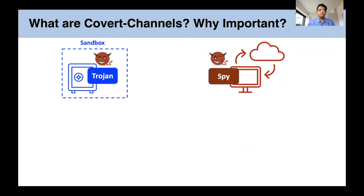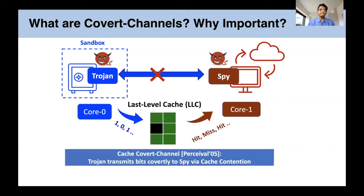Covert channels are channels of communication used by malicious programs to transmit data while avoiding detection. Consider a Trojan that has infected a software sandbox and gained access to sensitive data. To transmit this data out to the external world, the Trojan cannot use conventional channels of communication like opening up a network socket from within the sandbox. Instead, the Trojan could leverage a covert channel emanating from cache contention to transmit data to a spy that is outside the sandbox with external connectivity.